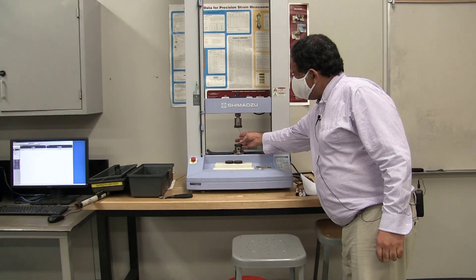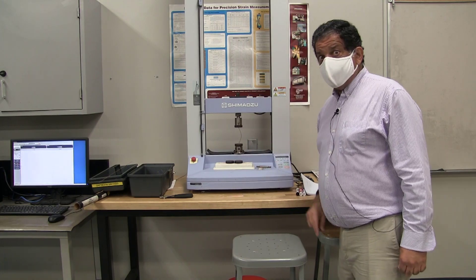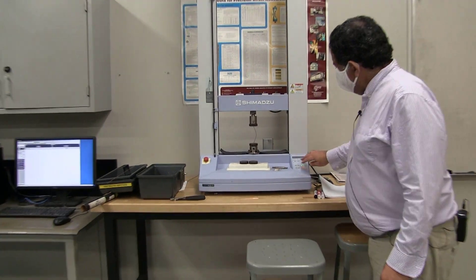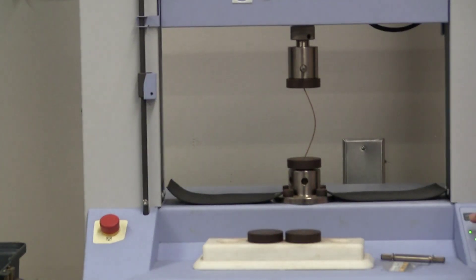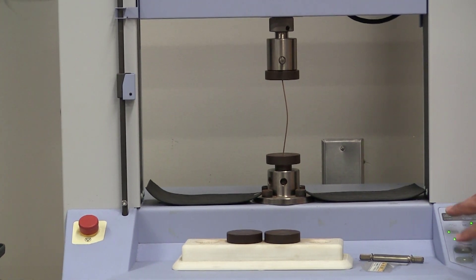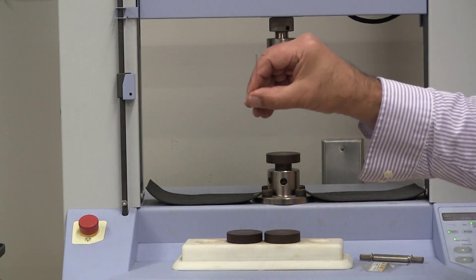You can see the classic sine wave buckled shape to the pinned-pinned specimen. I'm going to jog the crosshead up and remove that specimen.